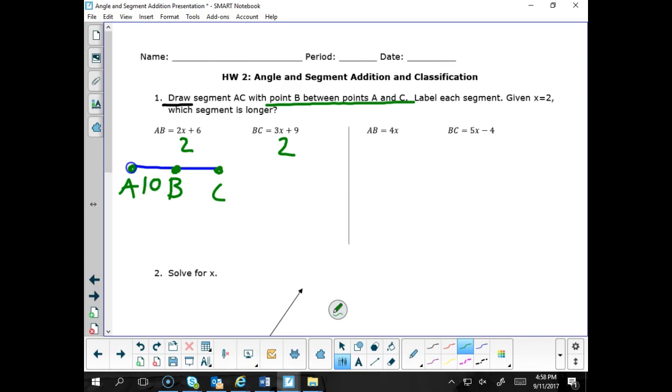Now BC, I have a little more room to work with here. 3 times 2 is 6. And 6 plus 9 is 15. So I'm going to put 15 on their segment BC. So which one's longer? Well, BC is. So I'm going to circle it.